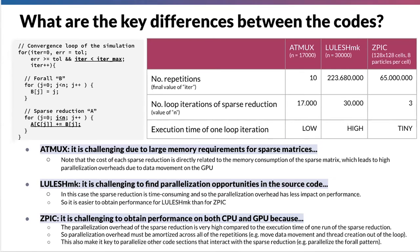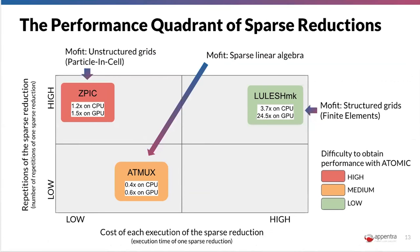The execution time is tiny because what you are computing in the sparse reduction are the interactions between the particles in the cell. If the number of particles confined in the cell is low, you have very few floating-point operations to perform — so tiny execution time per loop iteration of the sparse reduction.